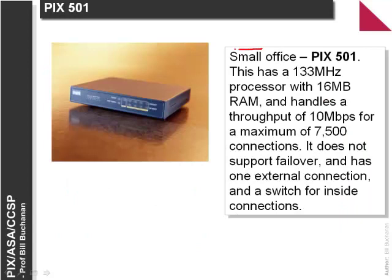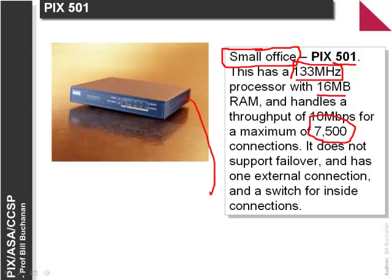The most basic PIX is called the Small Office or PIX 501. It is a relatively small processor running at 133MHz with a small amount of memory and can support up to 7,500 connections. It only has one external connection and one internal.